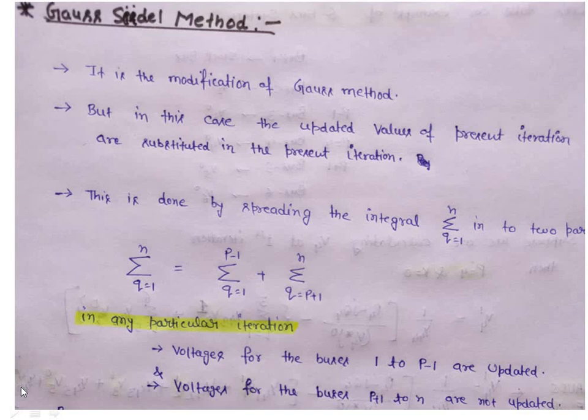Basically, Gauss-Seidel method is a little modification of Gauss method. In case of Gauss method, voltage values obtained for each bus in the present iteration are used in the next iteration. While in case of Gauss-Seidel method, voltage values of some buses in the present iteration are used in the present iteration itself. This is the only difference between Gauss method and Gauss-Seidel method.